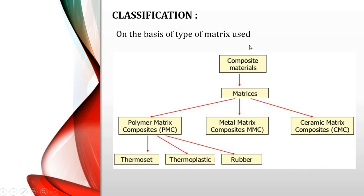On the basis of matrix, composite materials are classified into polymer matrix composites, metal matrix composites, and ceramic matrix composites. In these, polymer, metals like aluminum, or ceramics act as the matrix respectively. This lecture will confine itself to polymer matrix composites, which are made up of either thermosets, thermoplastics, or rubber.